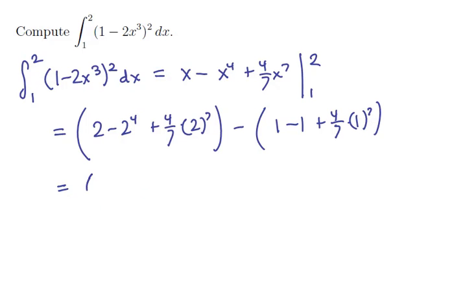This is going to be 2 - 16 + (4/7)·2⁷. By the way, that's 128, so that's going to give me 512/7. On this set of parentheses, the 1 and the -1 cancel, so we're just taking away 4/7.